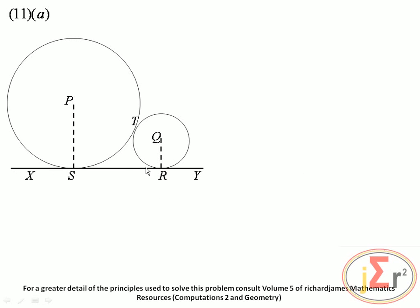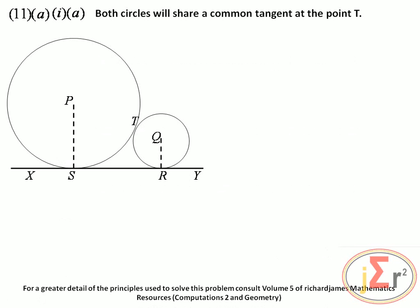Two circles with centers P and Q, and radii 5 centimeters and 2 centimeters respectively, touch each other at T. A straight line XY is tangent to both circles at S and R. We need to state why P, T, Q is a straight line. Both circles share a common tangent at point T. PT is the radius of the large circle and is perpendicular to the tangent; TQ is the radius of the small circle and is also perpendicular to the tangent.